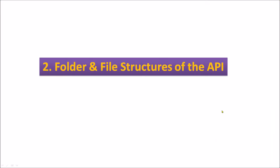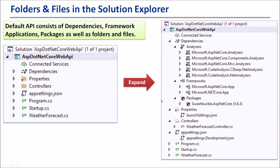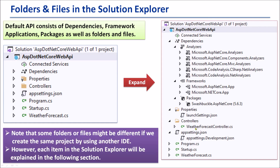Folder and file structure of the API. This is the Solution Explorer window from the project we just created. If we expand this window, many hidden files will be displayed. The default API consists of dependencies, framework applications, packages, as well as many folders and files. Note that some folders or files might be different if we create the same project using another IDE. However, each item in the Solution Explorer will be explained in the following sections.